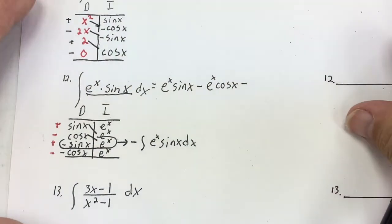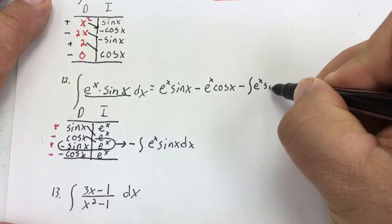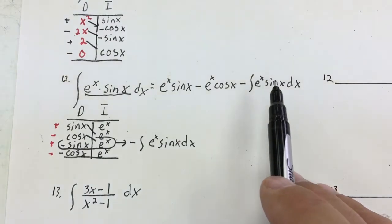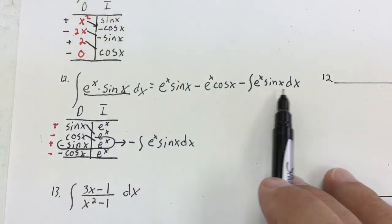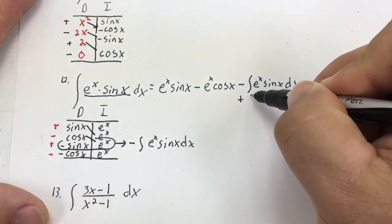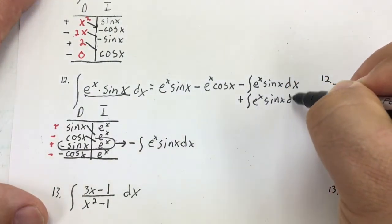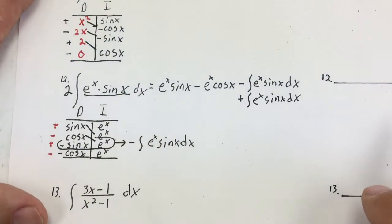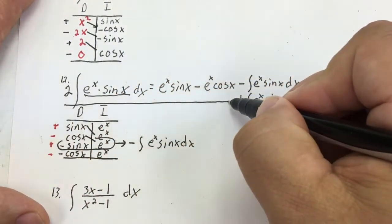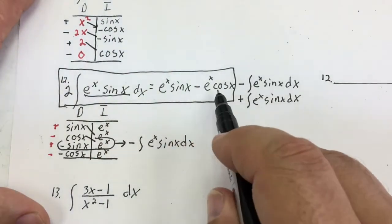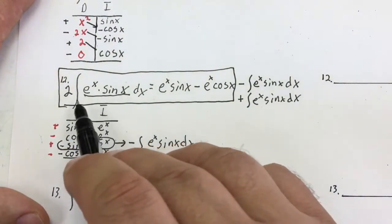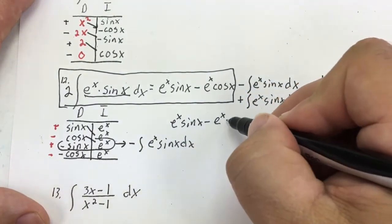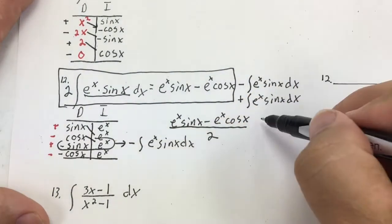And that integral goes on the right-hand side. I want to solve for the integral of eˣ sine x. I have another integral over here, so I need to get rid of it. The opposite of minus the integral of eˣ sine x is to add eˣ sine x to both sides. That gives me two times the integral of eˣ sine x equals eˣ sine x minus eˣ cosine x. So I divide everything by two.